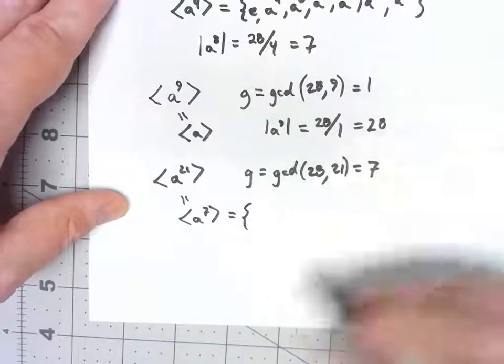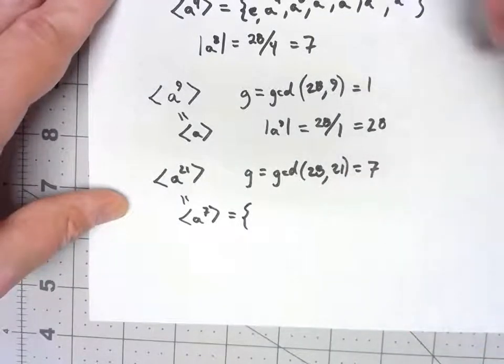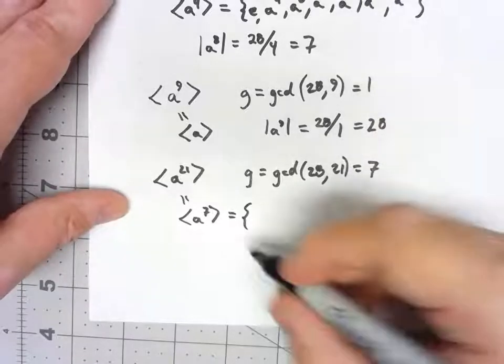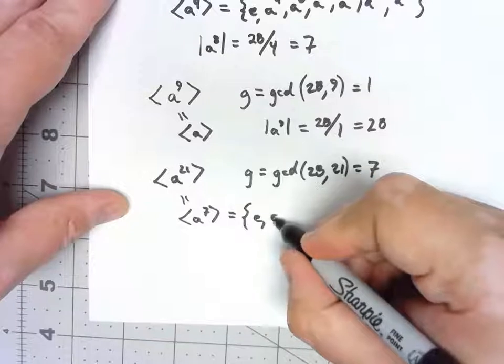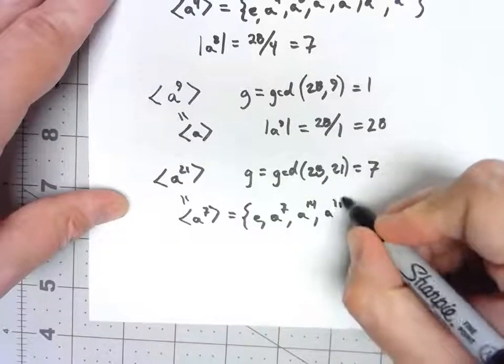There's only four elements because that means the order is the order of a, 28, over that 7. So it would be e, a^7, a^14, and a^21.